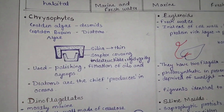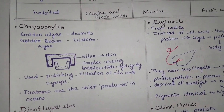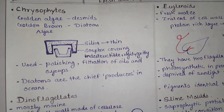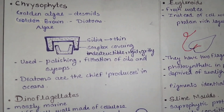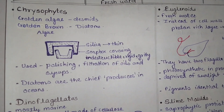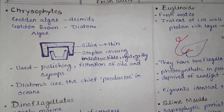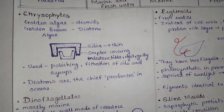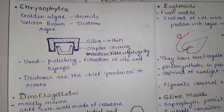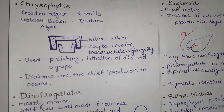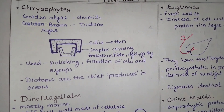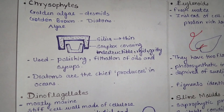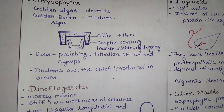Most important question: the walls of diatoms are made of silica, but they are thin — not thick. That is a true statement; saying they are thick would be false. The soap-box covering is indestructible and cannot be destroyed. It is gritty, rigid, and tough. Uses of diatoms include polishing and filtration of oils and syrups.